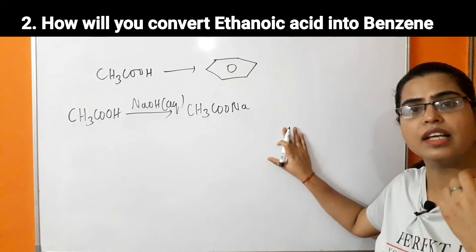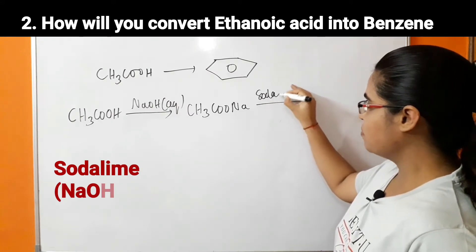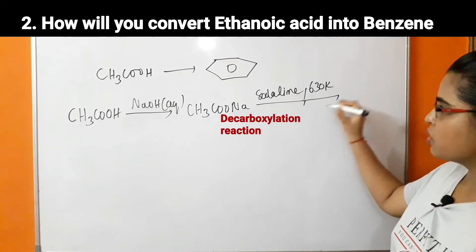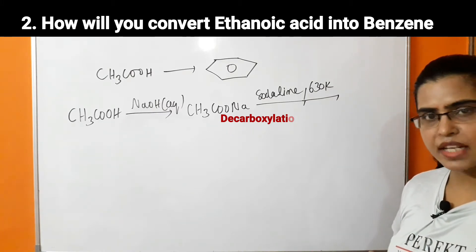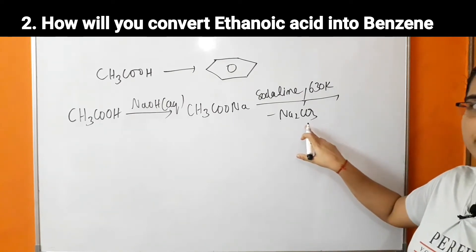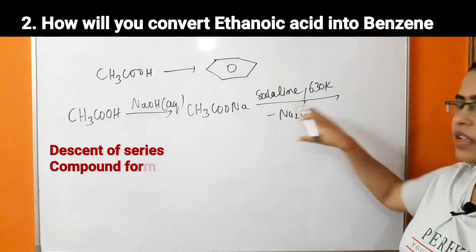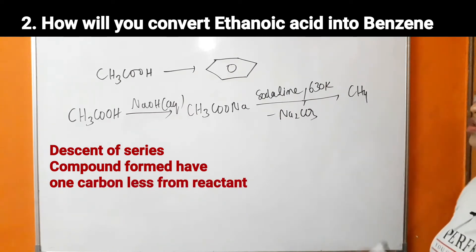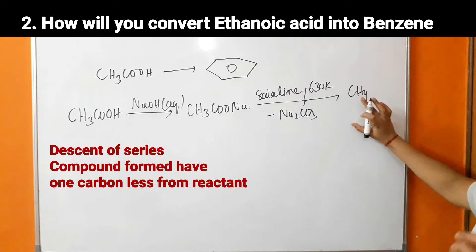The decarboxylation reaction takes place in the presence of soda lime — that is the mixture of NaOH and quicklime (calcium oxide) — at 630 Kelvin. There will be a decarboxylation reaction, meaning removal of Na₂CO₃ and thus removal of CO₂. This is a descent of series in which a hydrocarbon is formed — specifically CH₄ — because the product formed is one carbon less than the reactant.